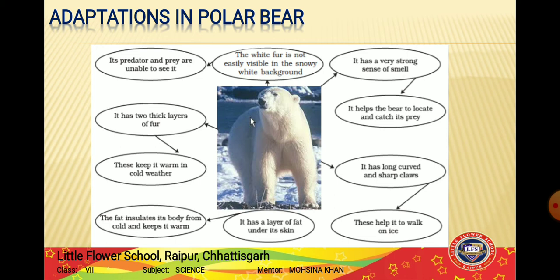Polar bears also have a thick layer of fat called blubber under the skin, which helps keep their body warm in extremely cold climate. This fat layer also provides nutrition when food becomes scarce. Polar bears hibernate for about six months underground, during which time they use this fat layer to extract energy since they are not hunting.